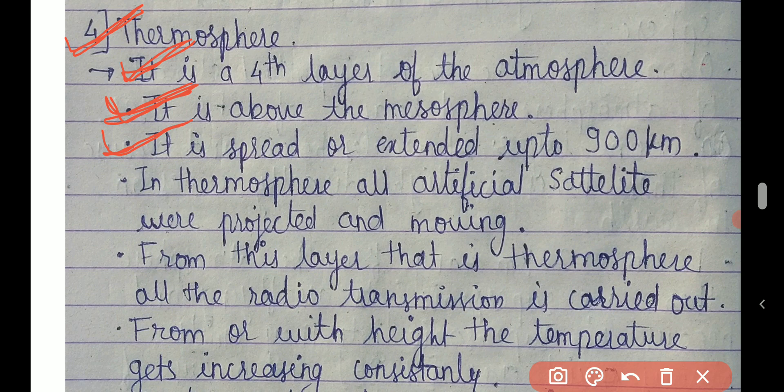In the thermosphere, all artificial satellites were projected and are moving — they orbit in this layer only. Also, from this layer all radio transmission and communication satellites were launched; all telephone and radio communication functions are carried out in the thermosphere.